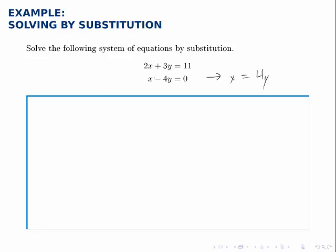So when you're solving by substitution, you want to look for a variable somewhere that doesn't have any coefficient other than one. So here I noticed that x was by itself, so it makes it easy to solve for it and get x equals 4y.